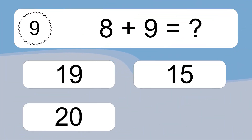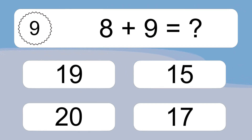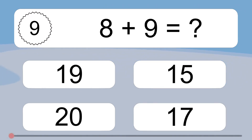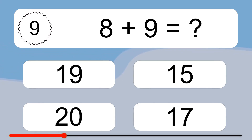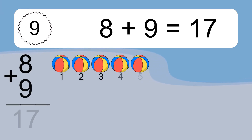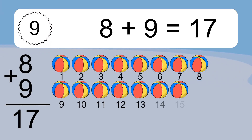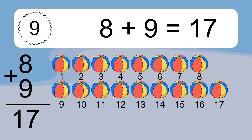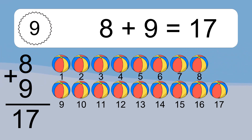8 plus 9 equals what? 8 plus 9 equals 17. Let's count it: 1, 2, 3, 4, 5, 6, 7, 8, 9, 10, 11, 12, 13, 14, 15, 16, 17.